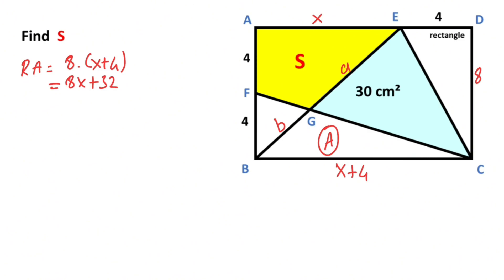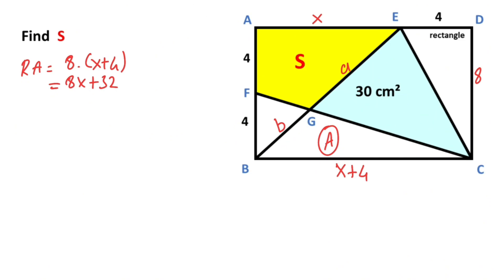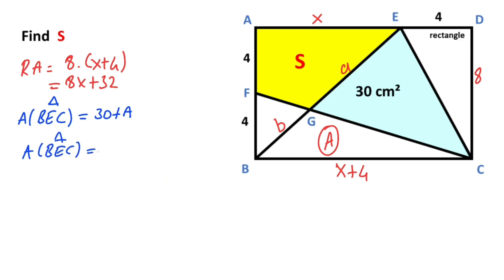Now if we calculate this triangle area, the area of triangle BEC equals 30 plus capital A. At the same time, we know that the area of triangle BEC is also equal to half of the rectangle.